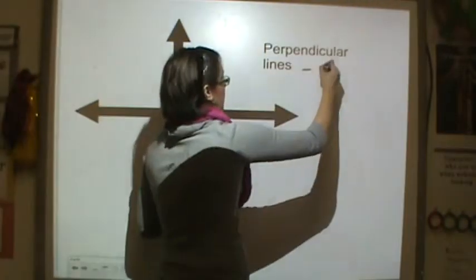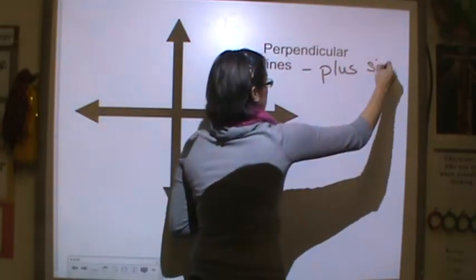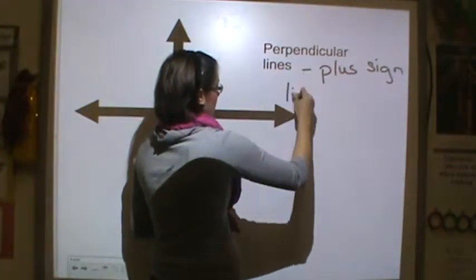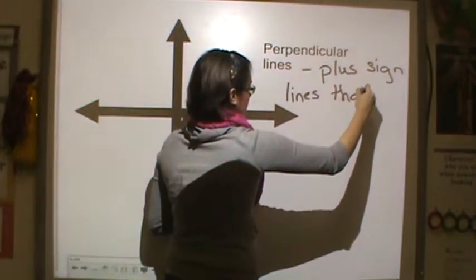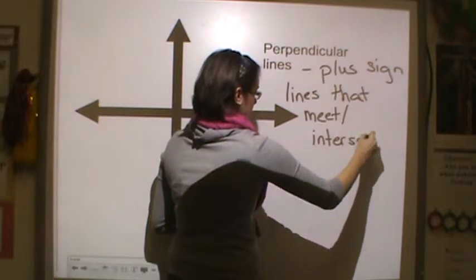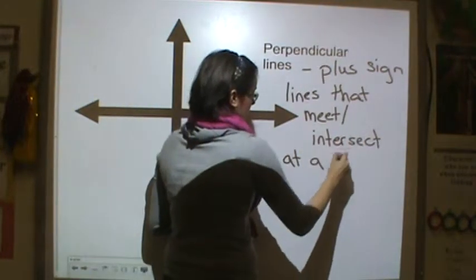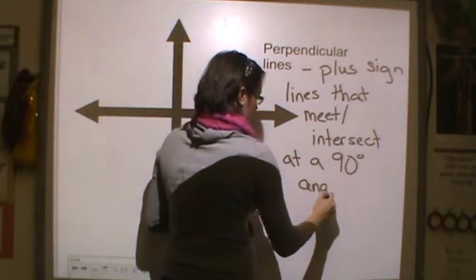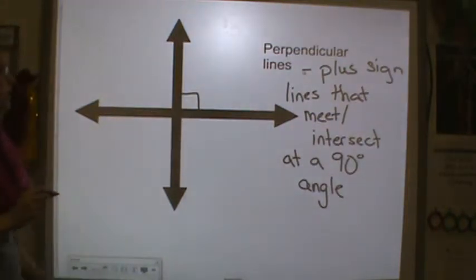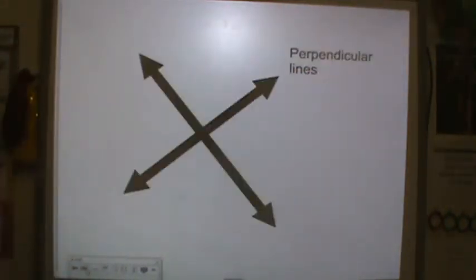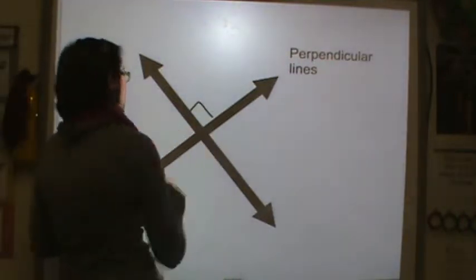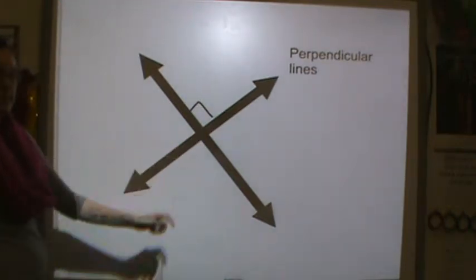Perpendicular lines — I like to call them a plus sign because they look like a plus sign. Perpendicular lines are lines that meet or intersect at a 90-degree angle, which is like a corner. We make that little mark to denote that it is a perpendicular line. This is also an example of a perpendicular line — it's just turned. It's still a corner, still a 90-degree angle.